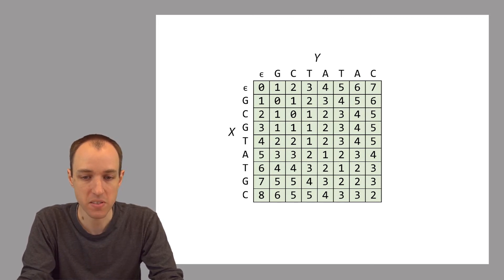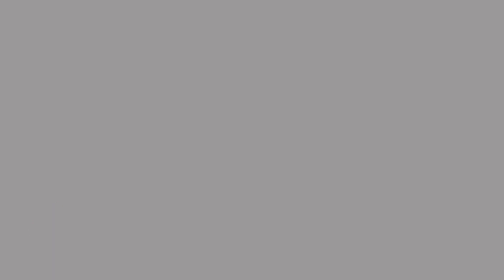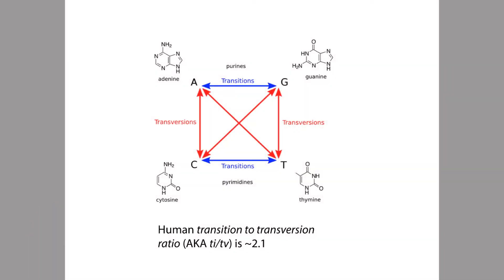In fact, both of these things are the case. Some DNA substitutions are more likely than others. For example, we can divide all possible DNA substitutions into two categories called transitions and transversions. To understand what these are, we first have to understand that the bases A and G — adenine and guanine — both belong to a category called purines. And then the bases C and T both belong to a category called pyrimidines. Substitutions that change a purine to another purine or a pyrimidine to another pyrimidine are called transitions.